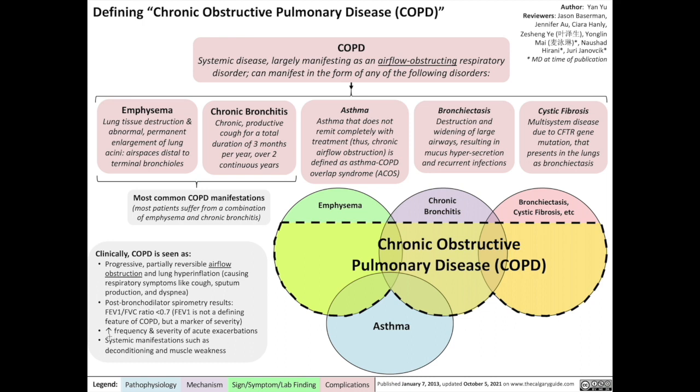COPD is also seen as increased frequency and severity of acute exacerbations, and we'll make sure to have a video about acute exacerbations as well. Finally, COPD is actually a systemic inflammatory disorder, so it has systemic manifestations such as deconditioning and muscle weakness.